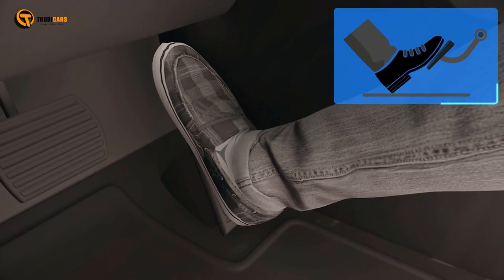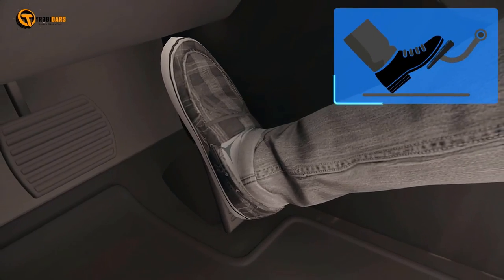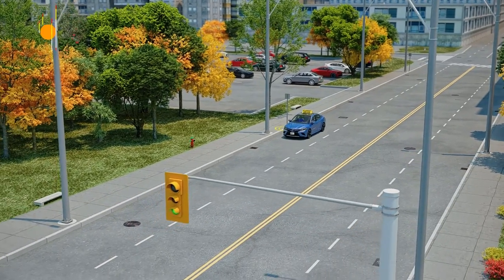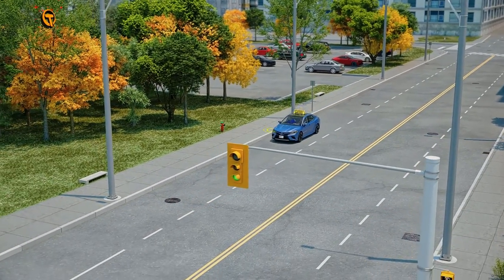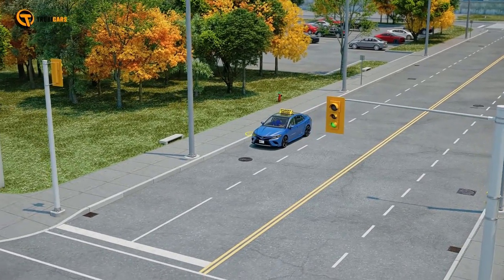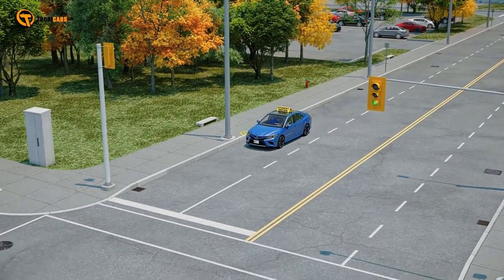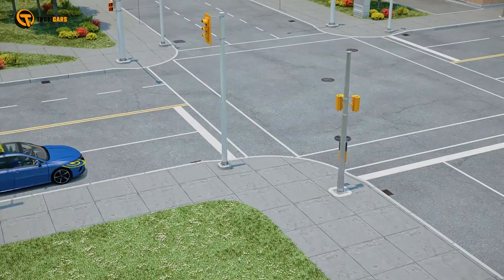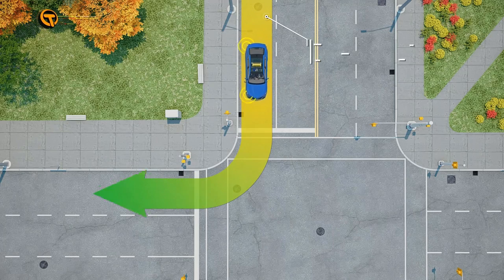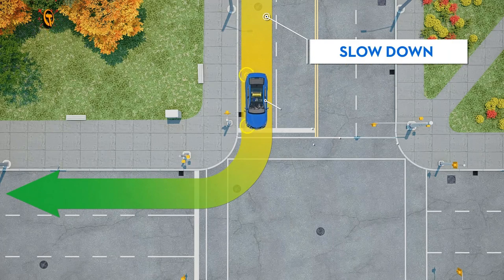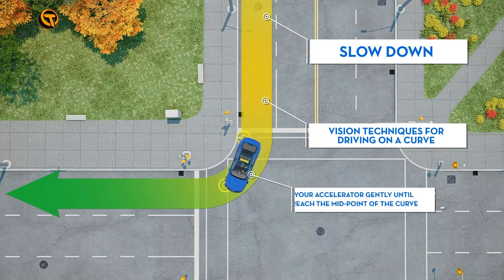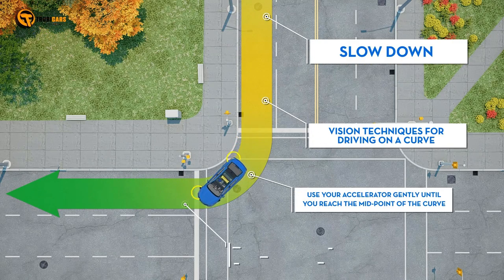You need to drop your speed as you approach a turn, normally in a straight line. Use the remaining energy in the car to take you around the turn and do not accelerate until at least halfway around the turn. You must not stop or go too slow around the turn.